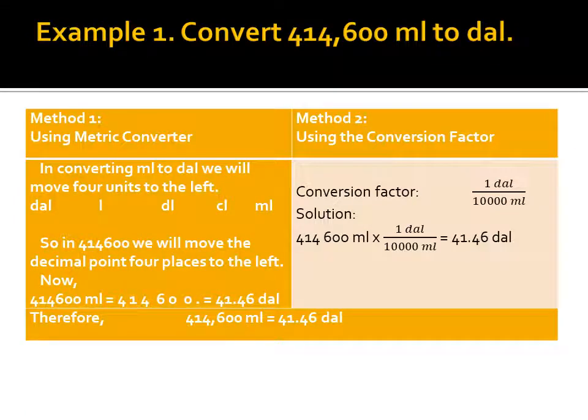Example: convert 414,600 milliliters to dekaliters (DAL). Method 1 — using the metric converter: in converting milliliters to dekaliters, move 4 units to the left, so move the decimal point 4 places to the left. Thus 414,600 mL = 41.46 DAL. Method 2 — using the conversion factor: 1 DAL = 10,000 mL. So 414,600 × (1 DAL / 10,000 mL), cancel out mL: 414,600 ÷ 10,000 = 41.46 DAL.